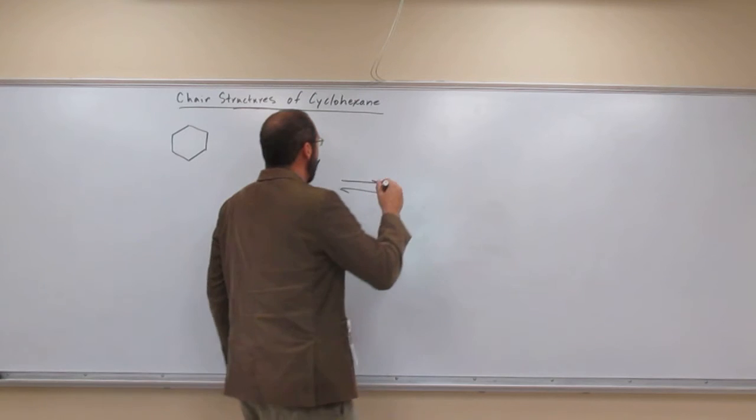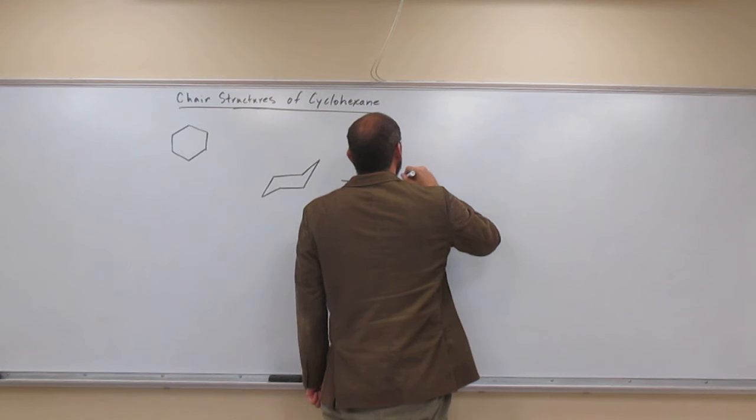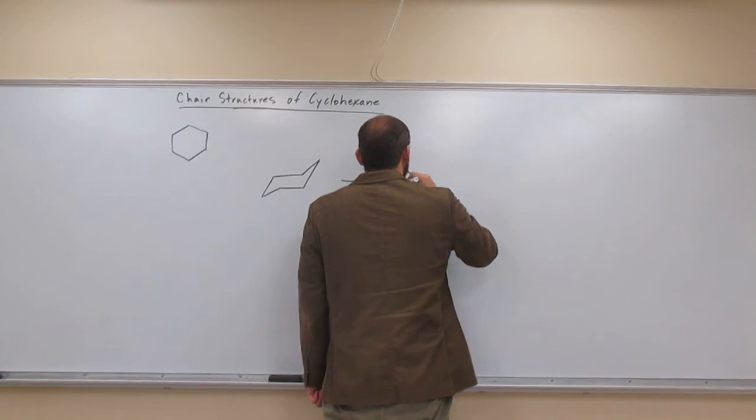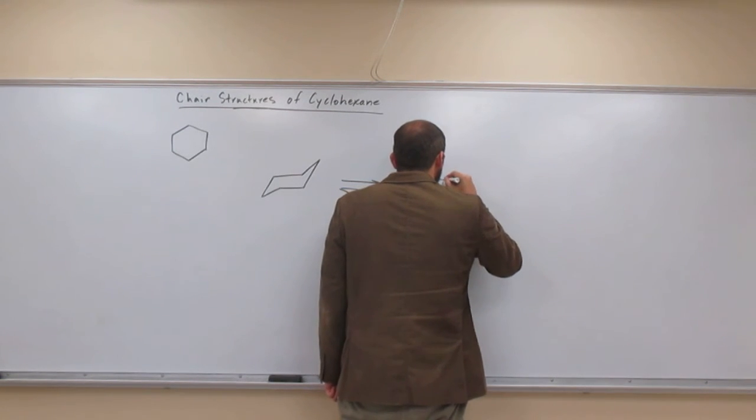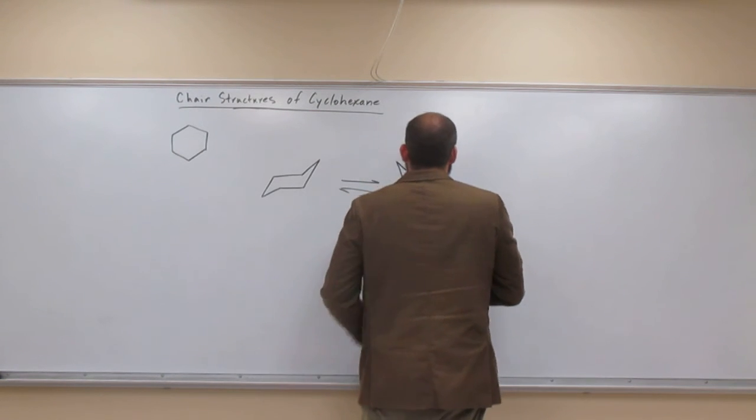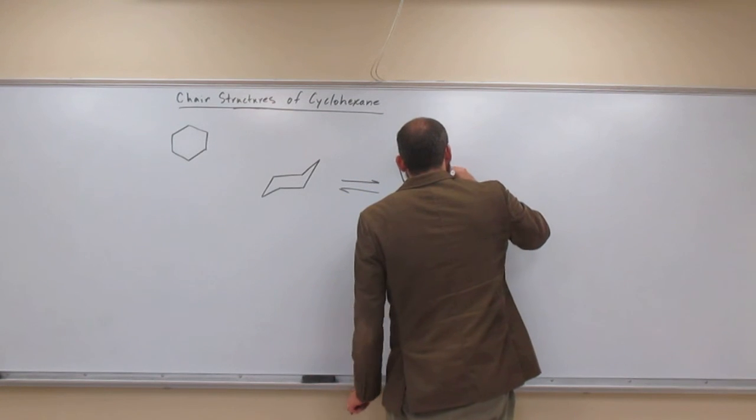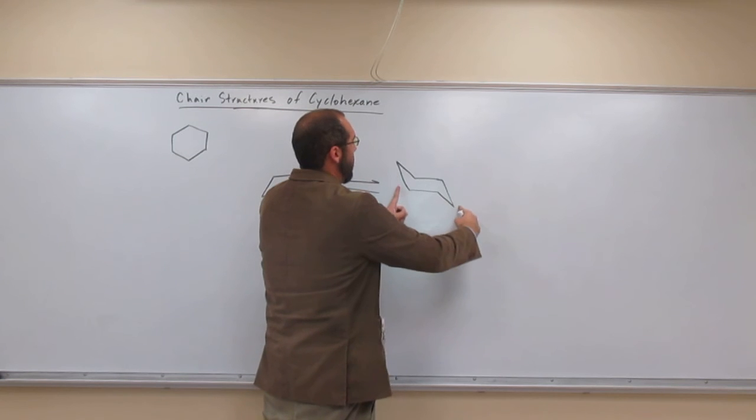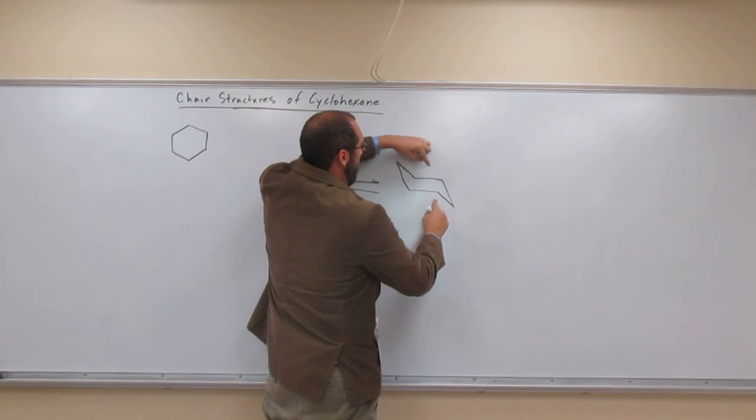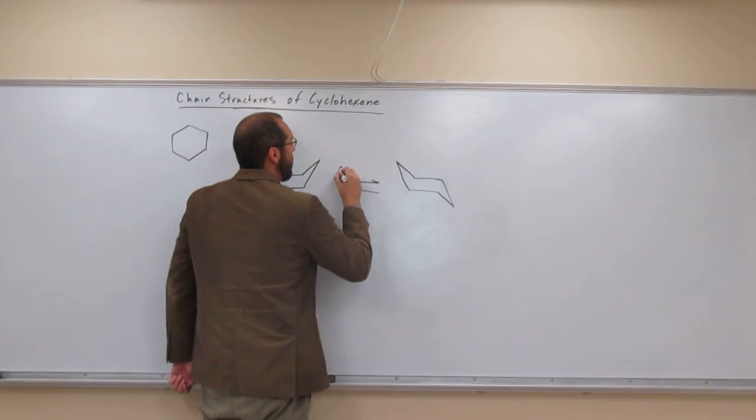Okay, let's do the chair flip now. Remember what we said about the lines being parallel, we're going to do the same thing. So, we have these two lines parallel to each other, these two lines parallel to each other, and these two lines parallel to each other. And we call that a chair flip.